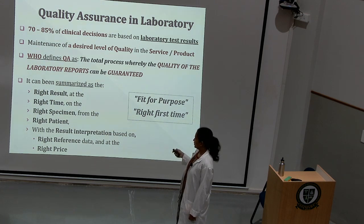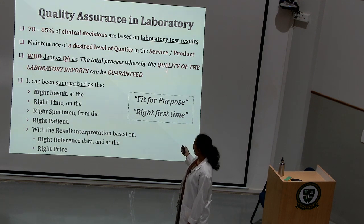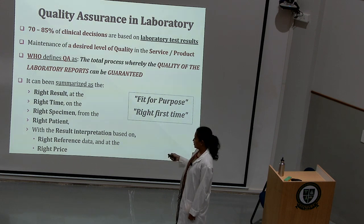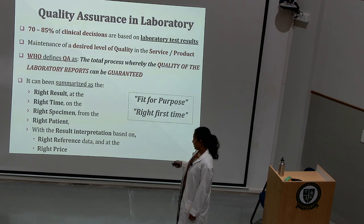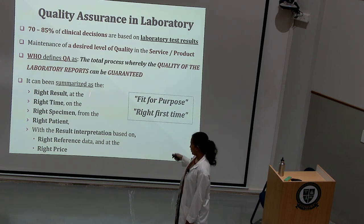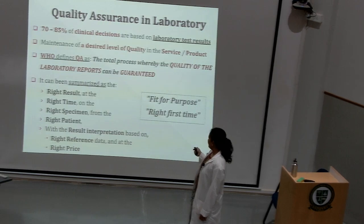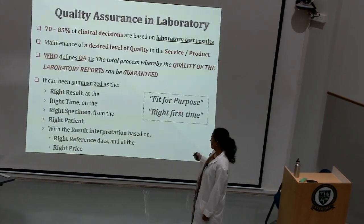The World Health Organization defines quality assurance as the total process whereby the quality of the laboratory reports generated can be guaranteed. It can be summarized as the right results at the right time on the right specimen from the right patient, with the result interpretation based on right reference data and at the right price. So we need to look into all these aspects to call it a quality result. It can briefly be explained as fit for the purpose, or right the first time itself.